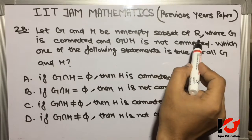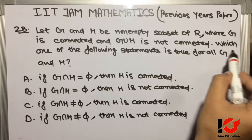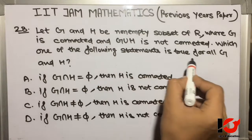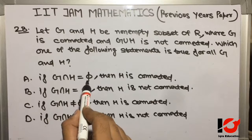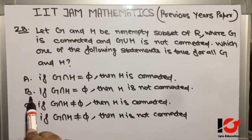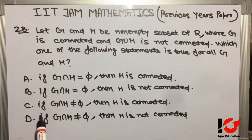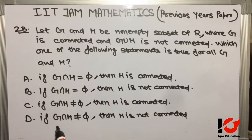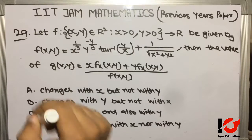Question 28: Let G and H be non-empty subsets of ℝ where G is connected and G ∪ H is not connected. Which statement is true for all G and H? Option A: if G ∩ H = ∅ then H is connected. Option B: if G ∩ H = ∅ then H is not connected. Option C: if G ∩ H ≠ ∅ then H is connected. Option D: if G ∩ H ≠ ∅ then H is not connected. The required answer is Option D — if G ∩ H ≠ ∅ then H is not connected.